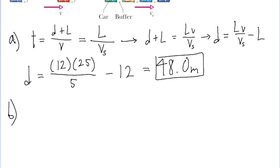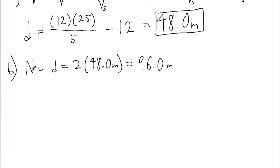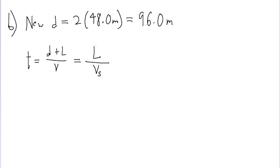Part B doubles the answer from Part A, so D = 2 × 48 = 96 meters. With this larger distance, the shockwave won't be stationary anymore — it'll be moving. Parts B and C ask for both the speed and direction of the shockwave. We'll use a more general version of the Part A equation, defining a new variable X as the distance the slow-moving cars travel in time T, and the fast-moving cars travel D + X in the same time.